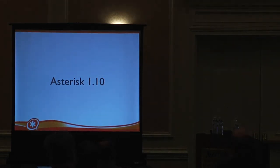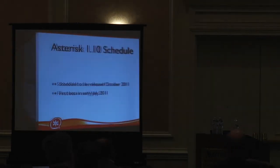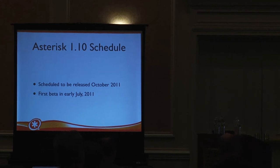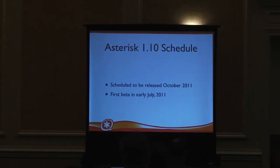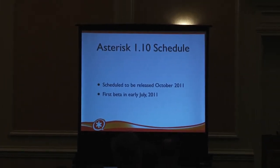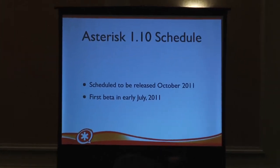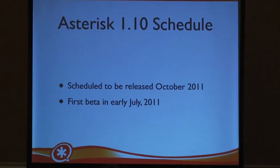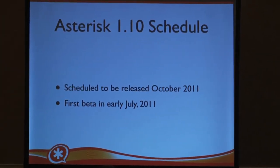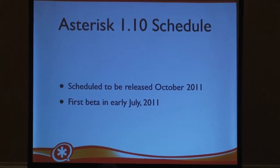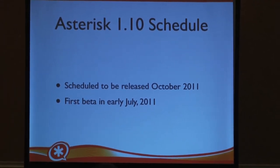So Asterisk 1.10 — that's going to be the next version of Asterisk. It's scheduled to be released in October of this year, just about four months away. We plan to do the first beta release in July, which isn't too far away. We're actually really close to done with developing all the features we have planned for that one.